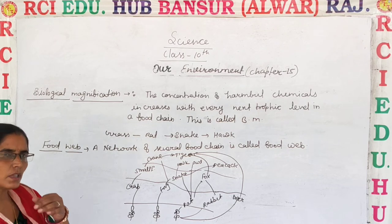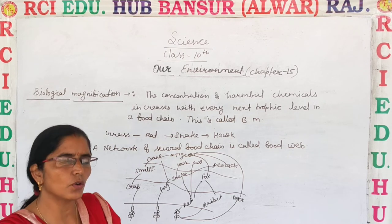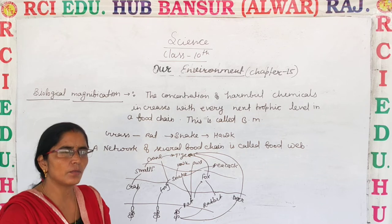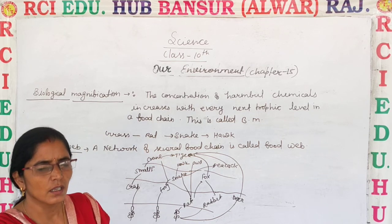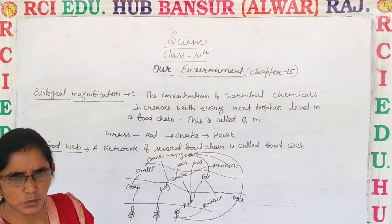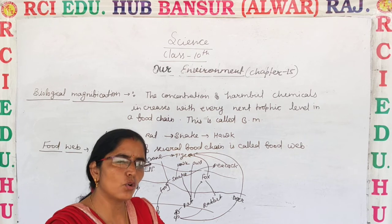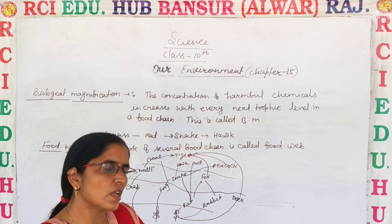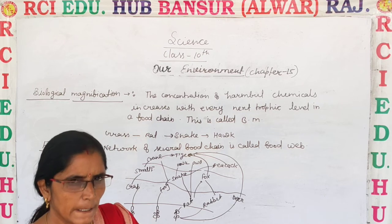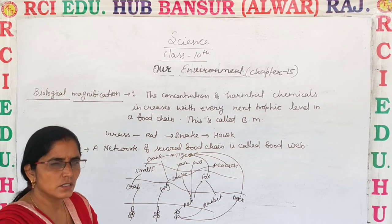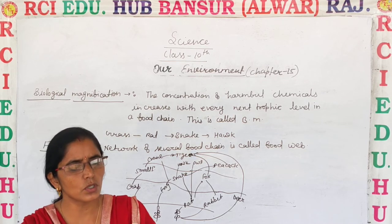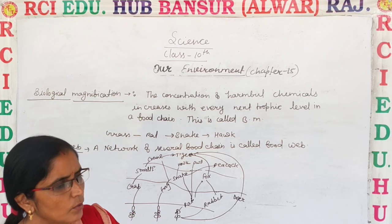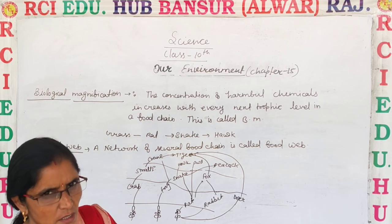We know that energy transfer is reduced at each trophic level, but if we talk about harmful chemical components — for example, fertilizers and pesticides that we regularly use — the concentration in plants can be measured in PPM (parts per million). For example, a plant may contain 0.0001 ppm. When we eat many such plants and seeds regularly, the percentage of these chemicals increases in our body.